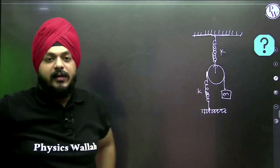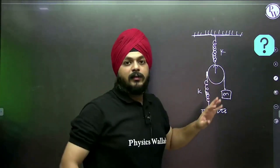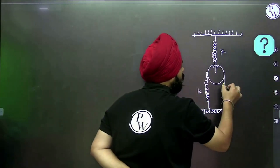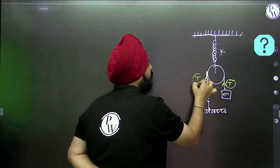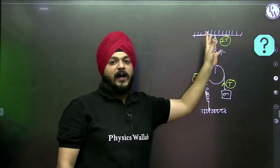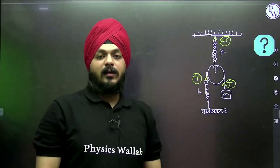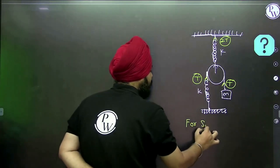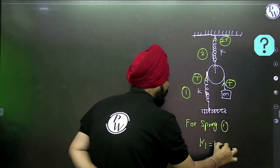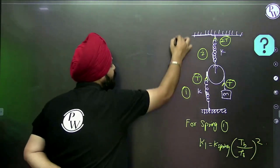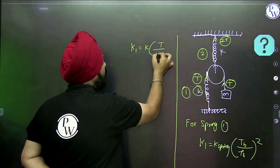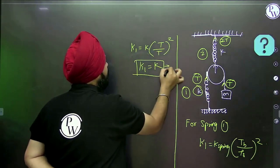For this shortcut, when N numbers of springs are there, consider all in series but calculate individually. For spring 1: what is the tension on the block? It is T. What is the tension on the spring? It is also T. So K1 equivalent equals K × (T/T)² — that gives K1 equals K. This is equation number 1.